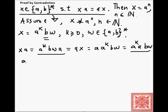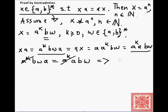Okay, so this has to be equal to this. So, a^k · b · w · a is equal to a^k · a · b · w. The a^k and a^k cancel each other, so we are left with the equality: b · w · a is equal to a · b · w.